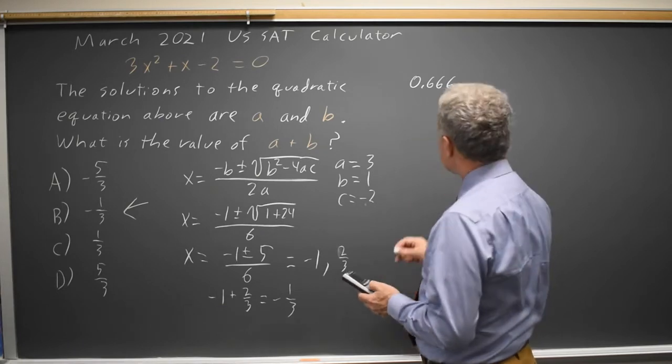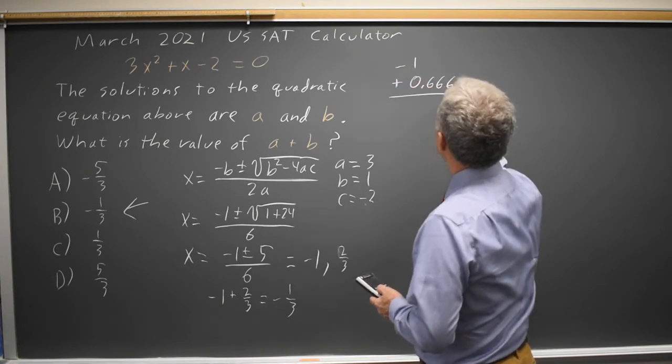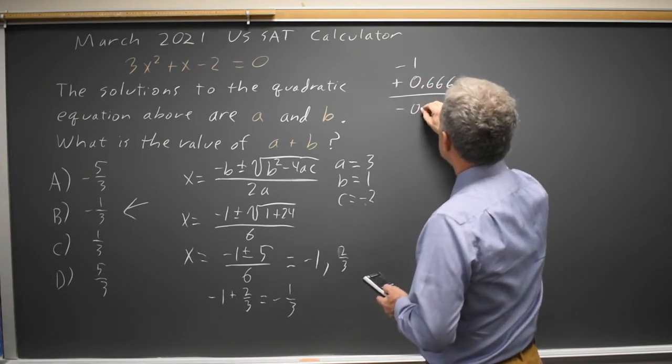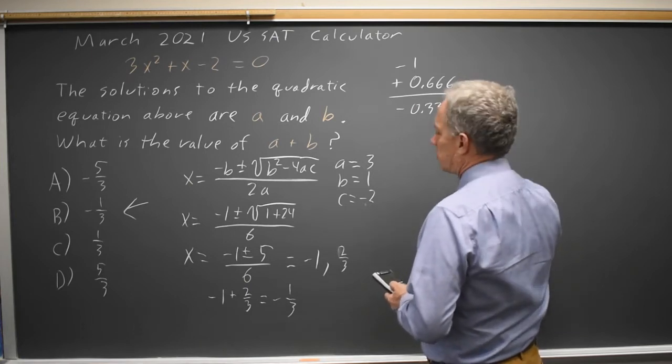And negative 1 is negative 0.334, which is about negative 1 third, within the rounding of the number of places that I copied.